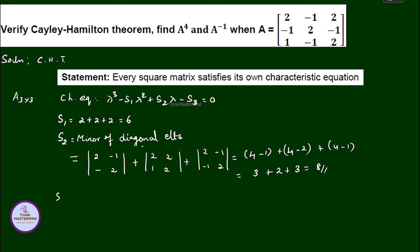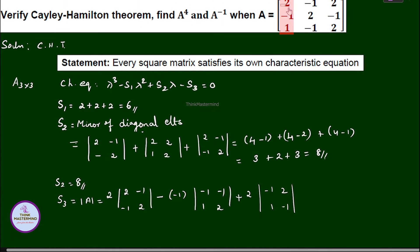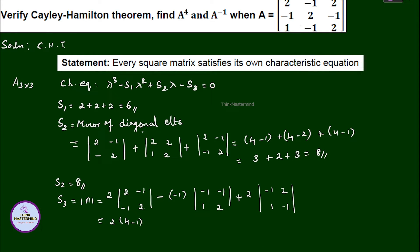Therefore S2 equals (4 minus 1) plus (4 minus 2) plus (4 minus 1), that is 3 plus 2 plus 3, which equals 8. So S2 equals 8 and S1 equals 6. S3 equals the determinant of A, which equals 2 times (4 minus 1) minus (minus 1) times (minus 2 plus 1) plus terms simplifying to 2 times 3 minus 2, giving S3 equals 6 minus 3, so S3 equals 3.